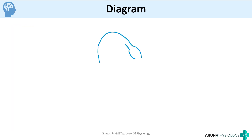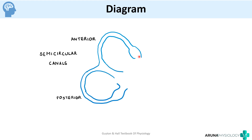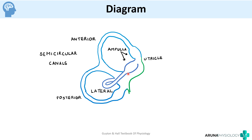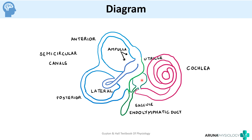We can draw a diagram of the semicircular canals. The first is the anterior semicircular canal, which has a bulge at the end called the ampulla. Then we have the posterior semicircular canal, and finally the lateral semicircular canal. All three semicircular canals have this bulge and open into a sac-like structure called the utricle. The utricle ends in the endolymphatic sac, and connected to the utricle is another globular sac-like structure called the saccule. The saccule is connected to the cochlea, which is the organ for hearing. So the semicircular canals, utricle, and saccule are vestibular organs, whereas the cochlea is for hearing.